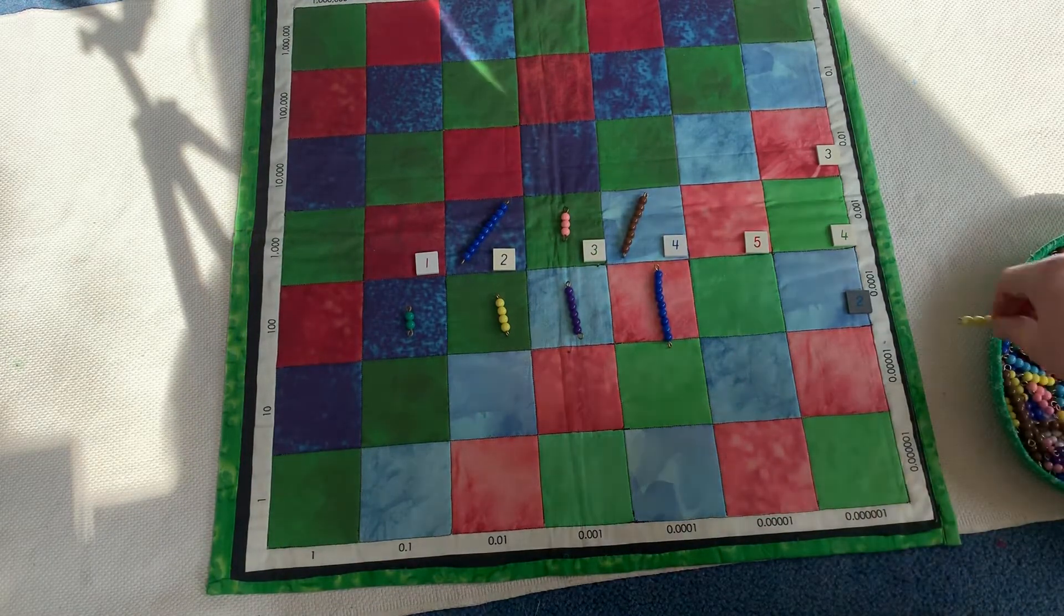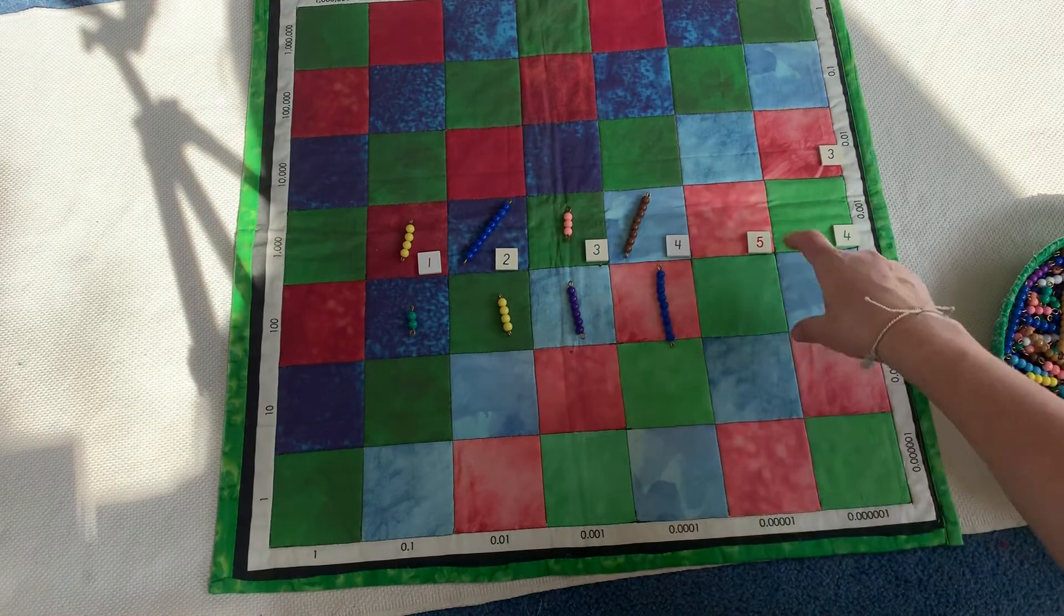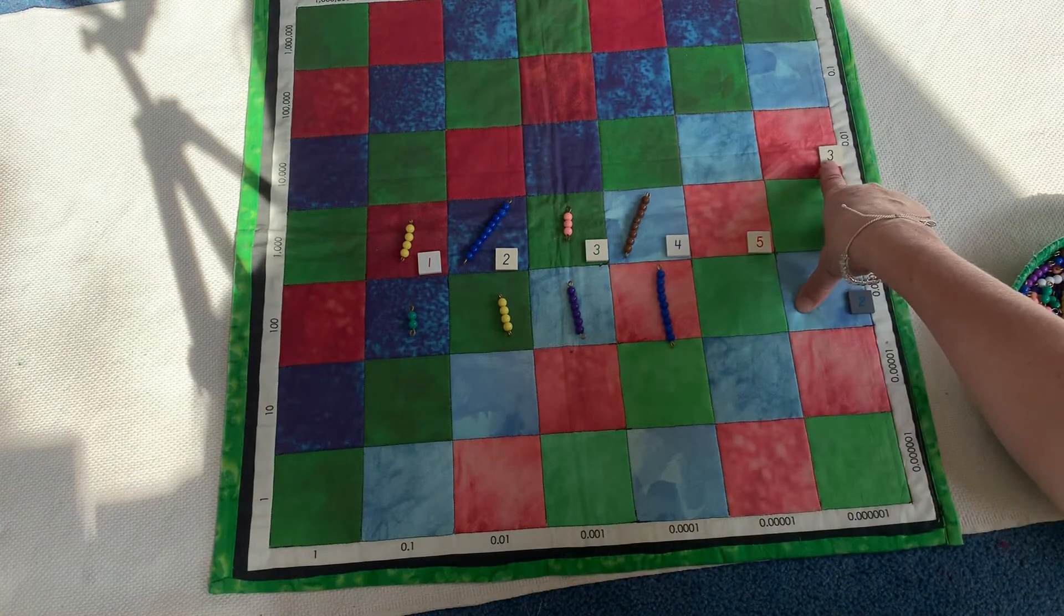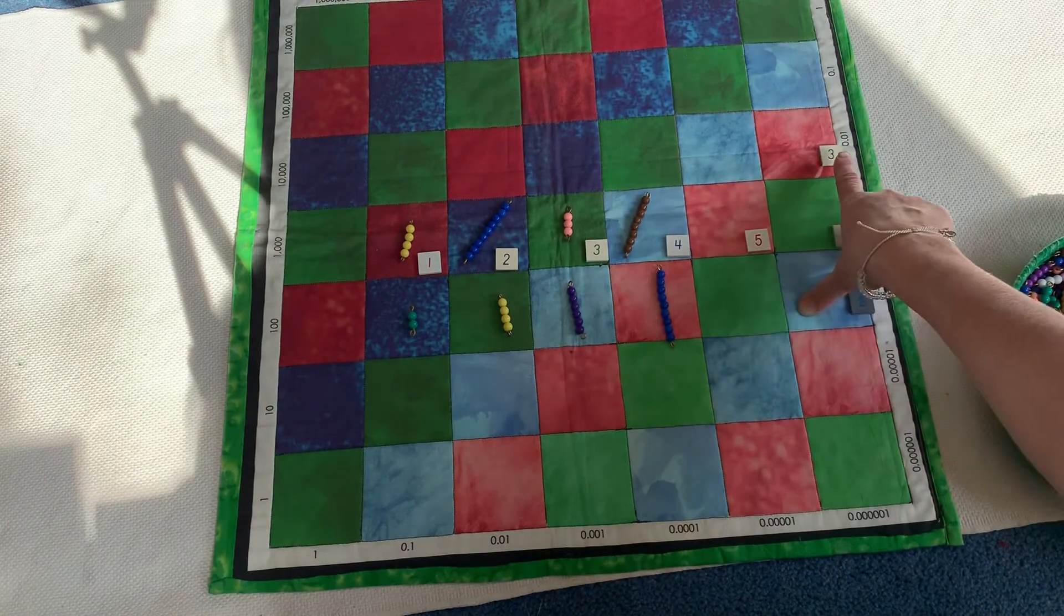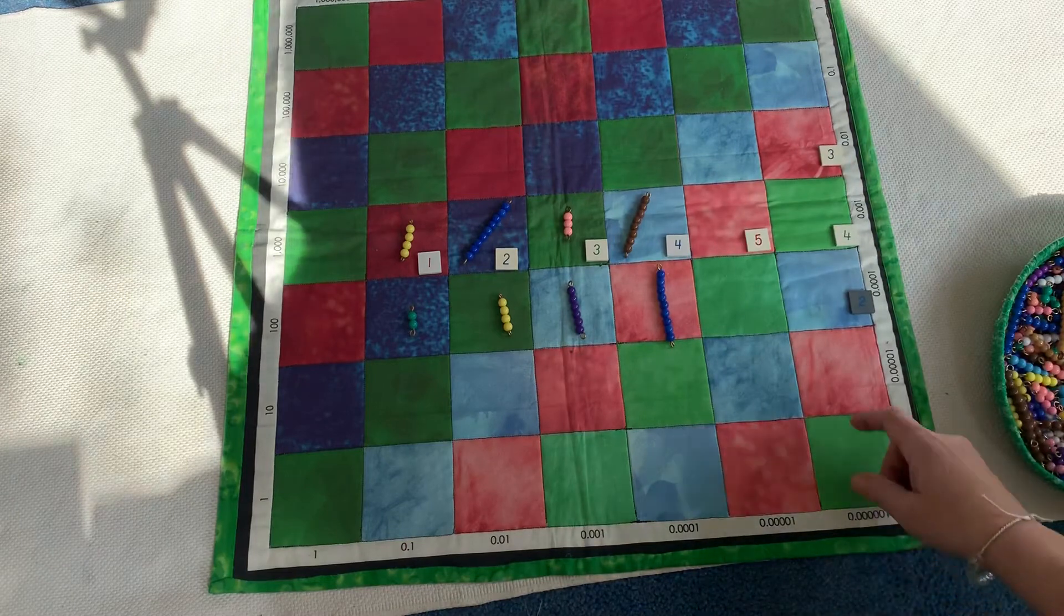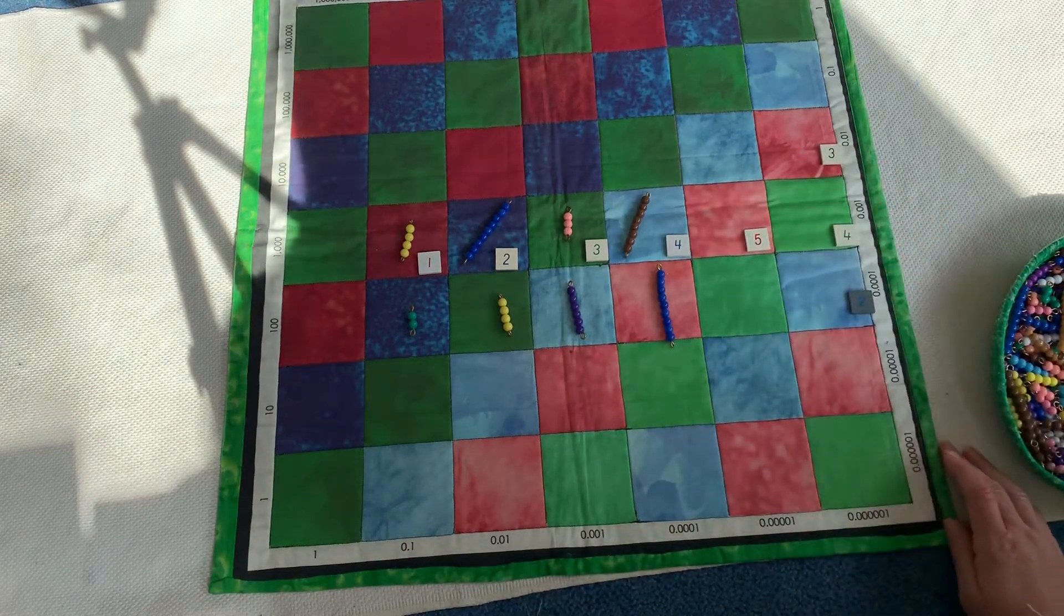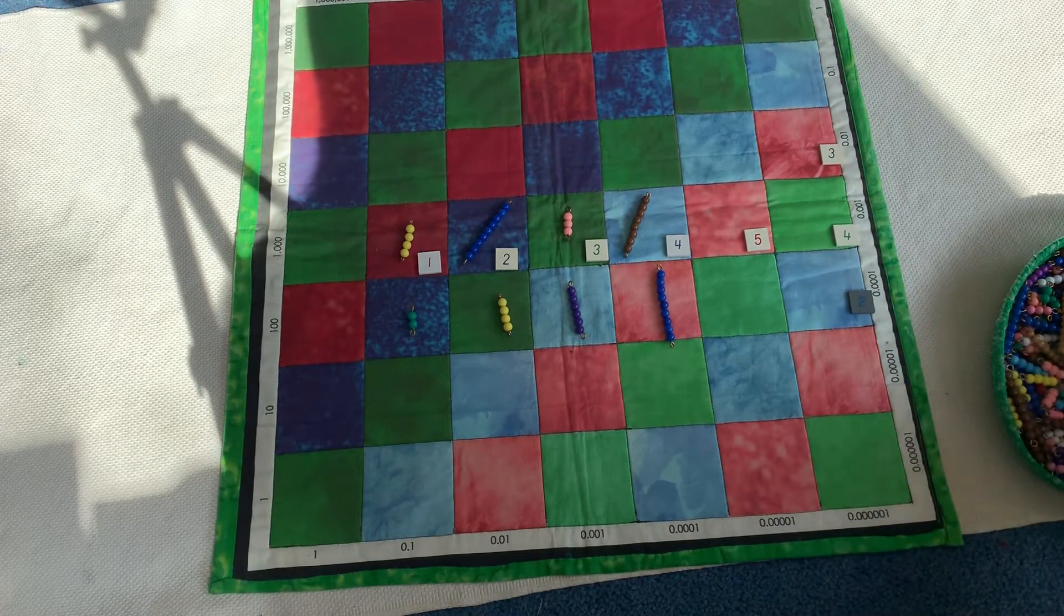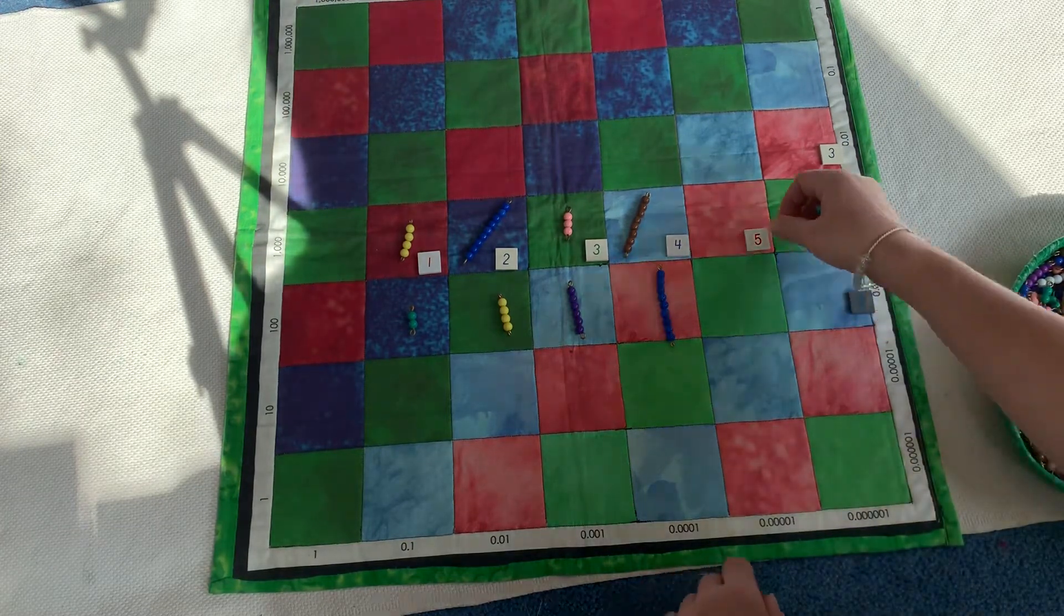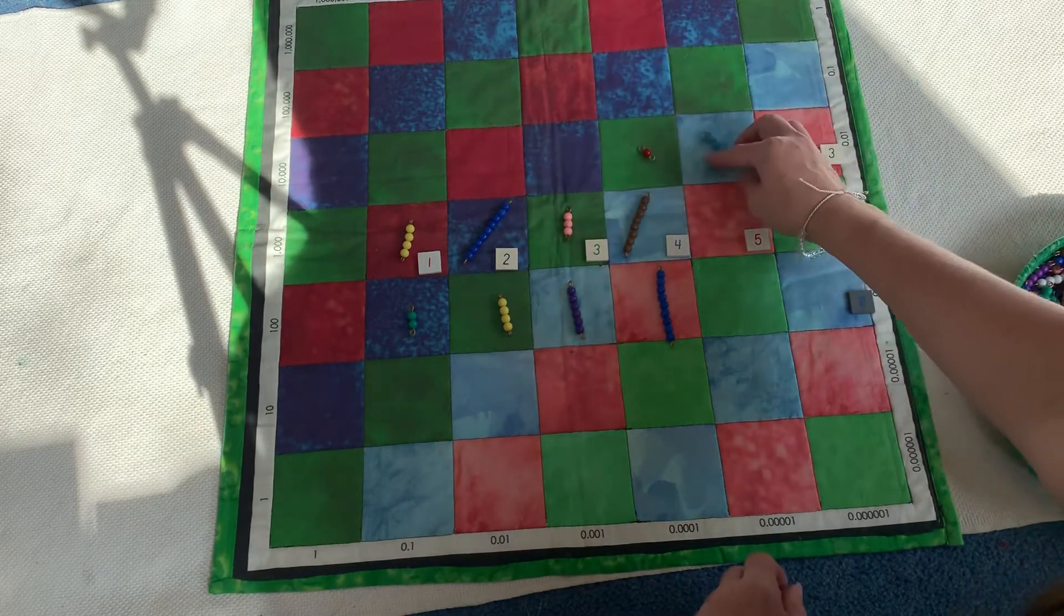One times four is four. Now we're going to multiply by the tens place. So five times three, that's really five hundredths times three, will give us 15, right? 15.